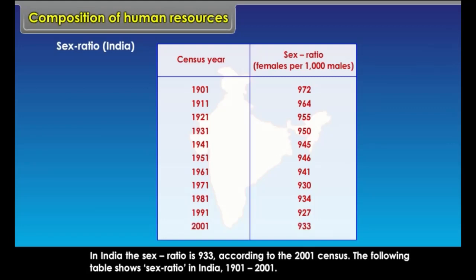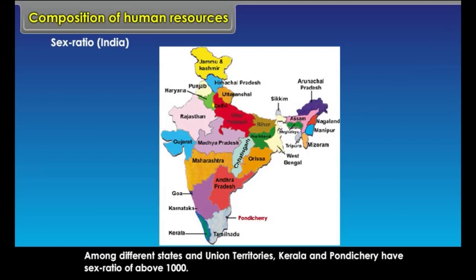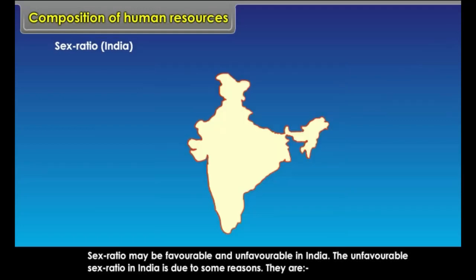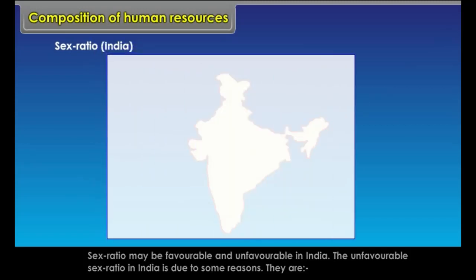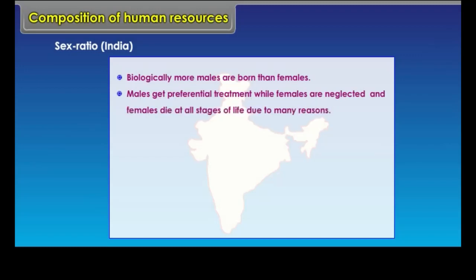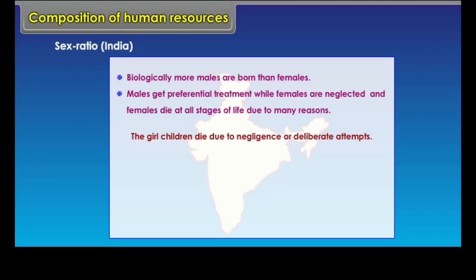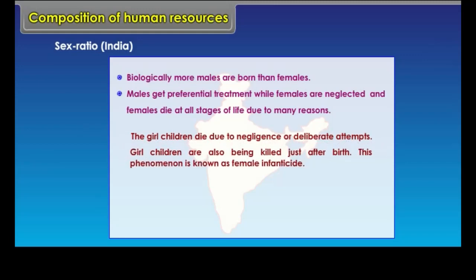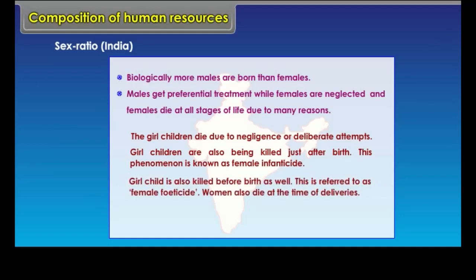Among different states and union territories, Kerala and Pondicherry have a sex ratio of above 1000. The unfavourable sex ratio in India is due to several reasons: biologically, more males are born than females; males get preferential treatment while females are neglected; females die at all stages of life. Girl children die due to negligence or deliberate attempts, a phenomenon known as female infanticide. Women also die at the time of deliveries.